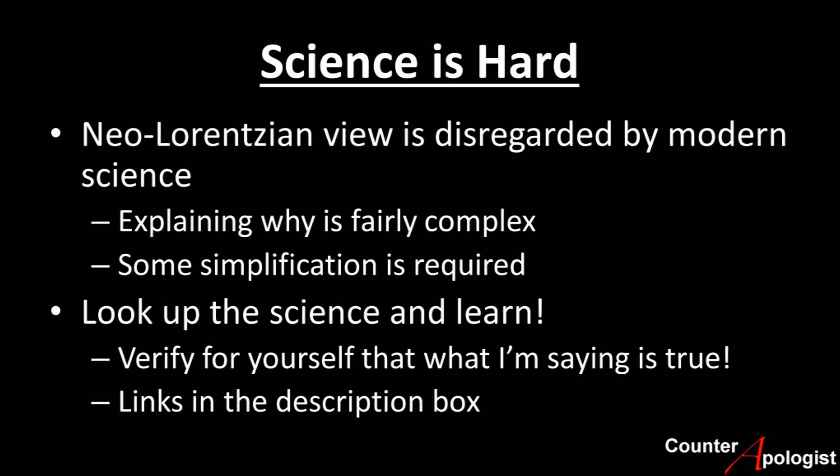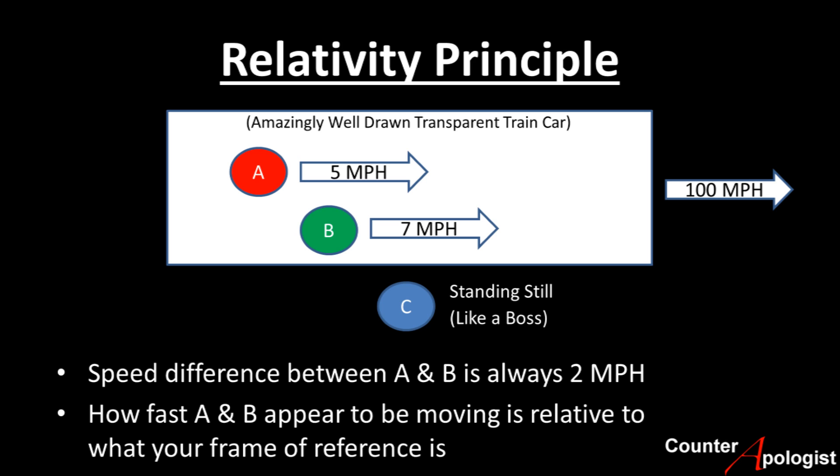To get started, you have to understand the uncontroversial relativity principle — something you experience every day. Imagine two people in a transparent train car moving at 100 mph. Person A can run at 5 mph and Person B at 7 mph. From Person A's frame of reference, Person B is moving faster by only 2 mph. However, Person C standing on the side of the tracks sees both people going very fast — at 105 and 107 mph — yet the difference between them is still only 2 mph.